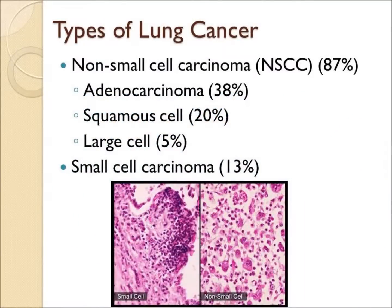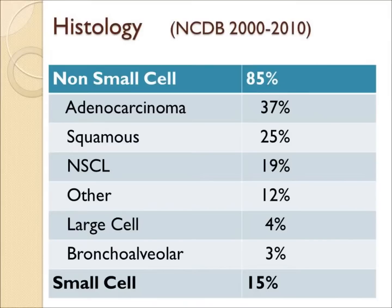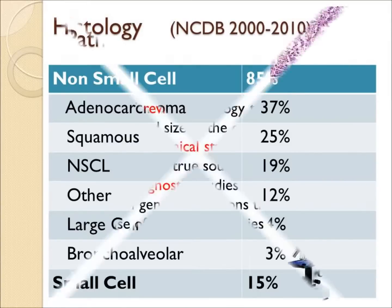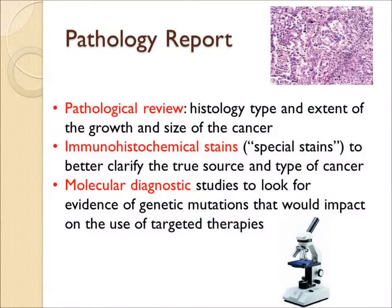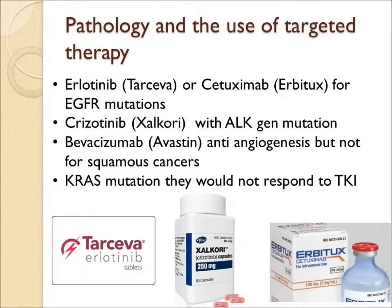Most cancers are called non-small cell cancer under the microscope, and adenocarcinoma is the most common type within that group. A biopsy will confirm the diagnosis either at bronchoscopy or CAT scan biopsy. The pathologist will determine the type and may do special stains to clarify the source, or molecular diagnostic studies to look for evidence of genetic mutations such as EGFR, KRAS, or ALK, which may determine the use of targeted therapies such as Tarceva or Avastin.